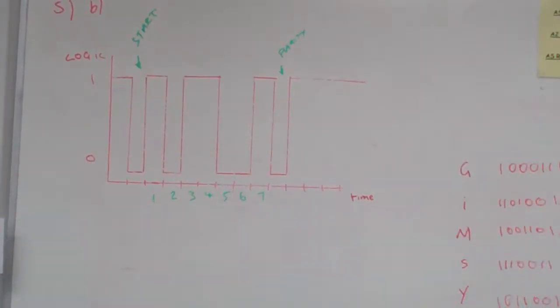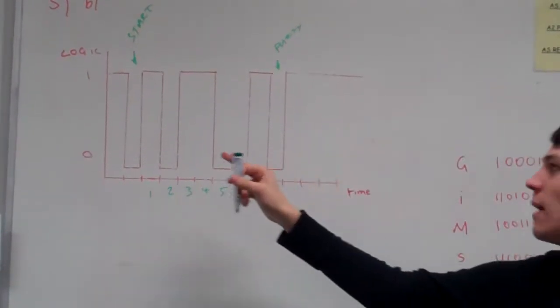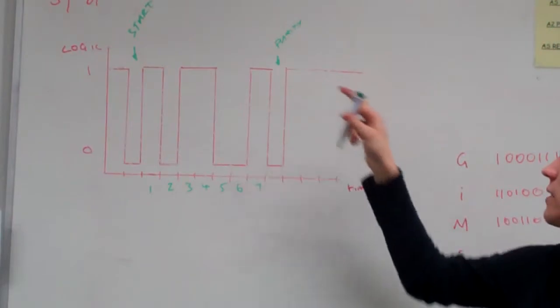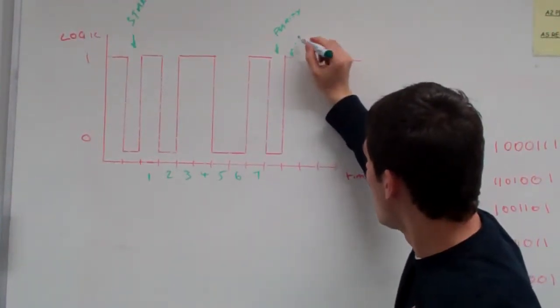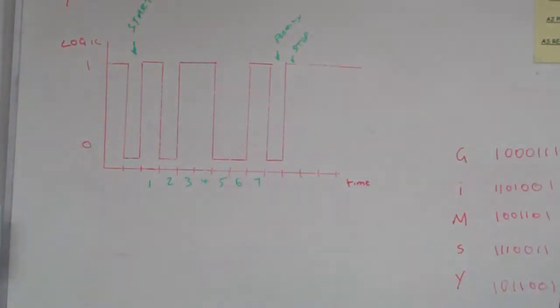Then immediately after the parity bit must be the stop bit. The stop bit tells it I've received the whole signal and the parity bit. The stop bit is the one that goes after the parity bit.